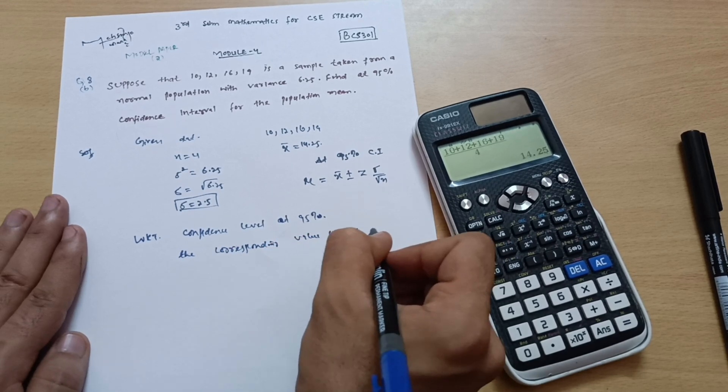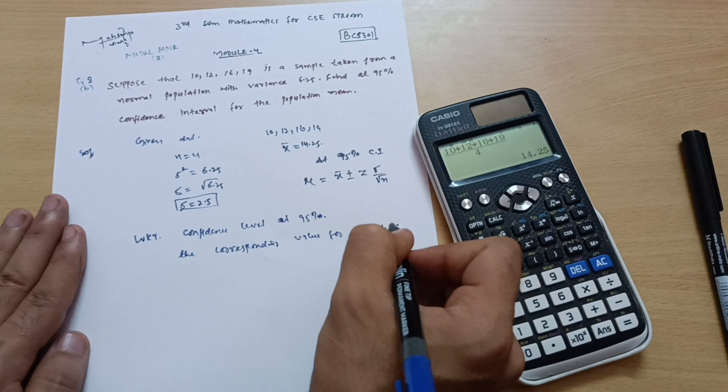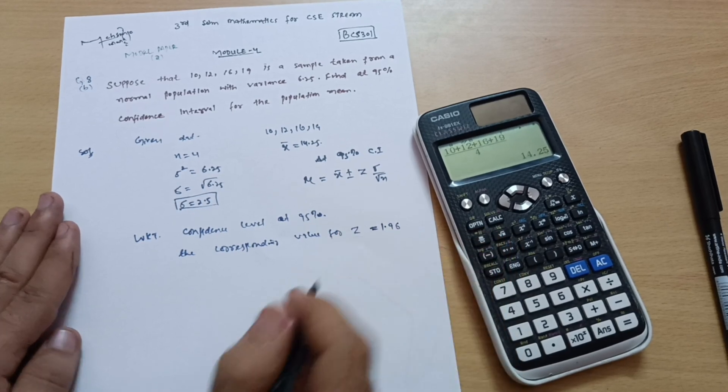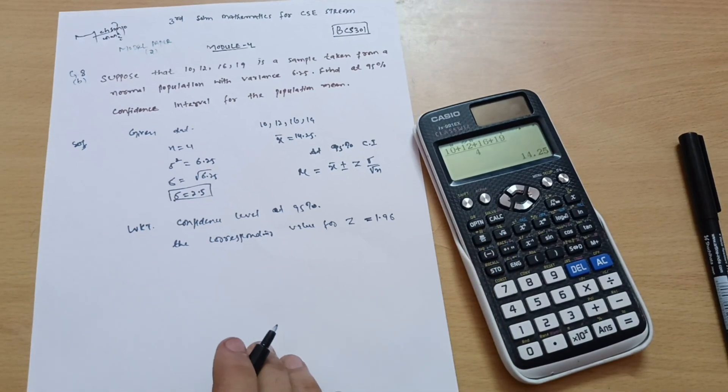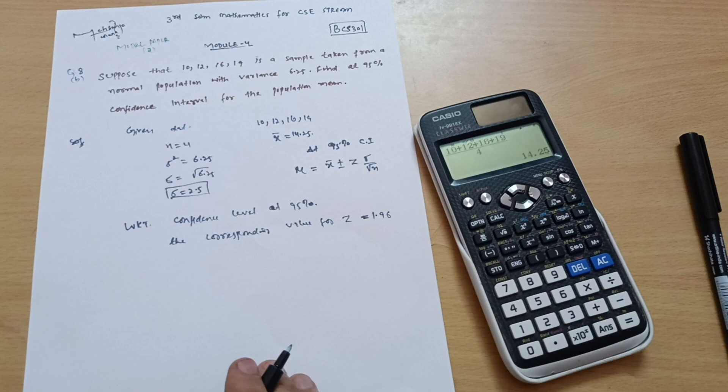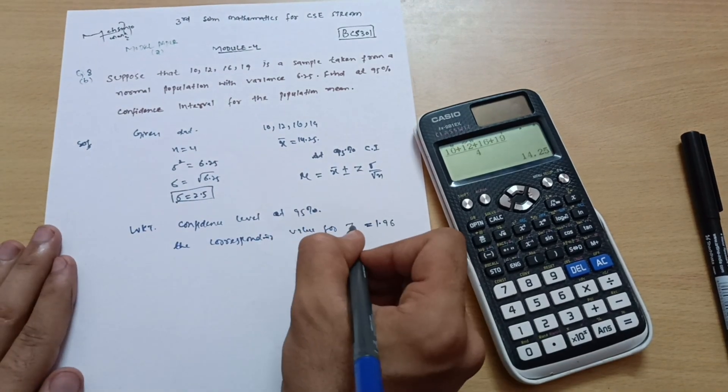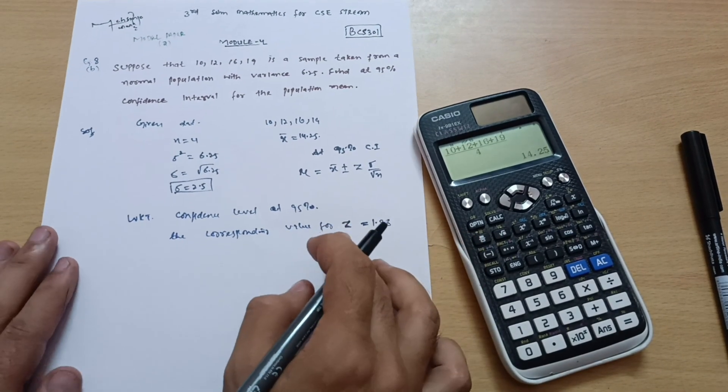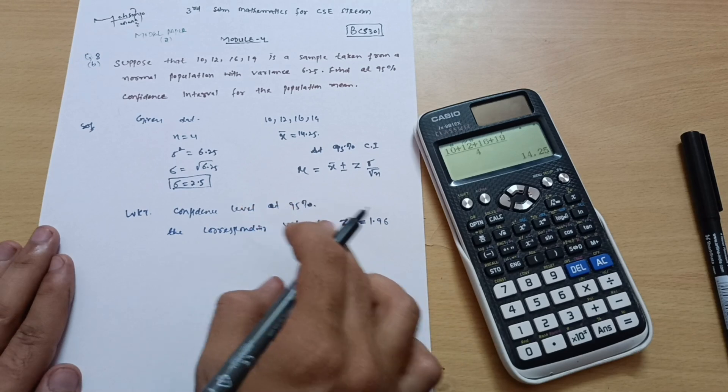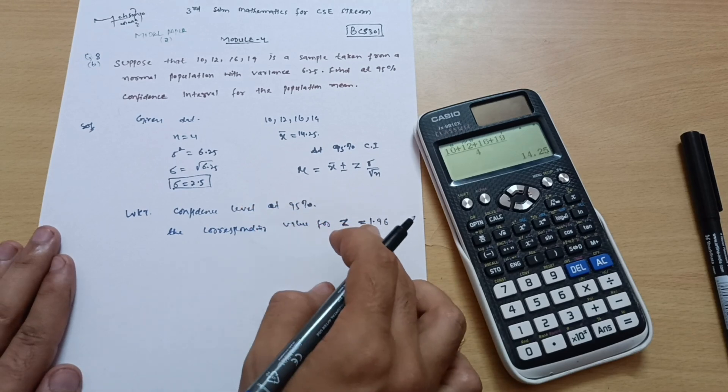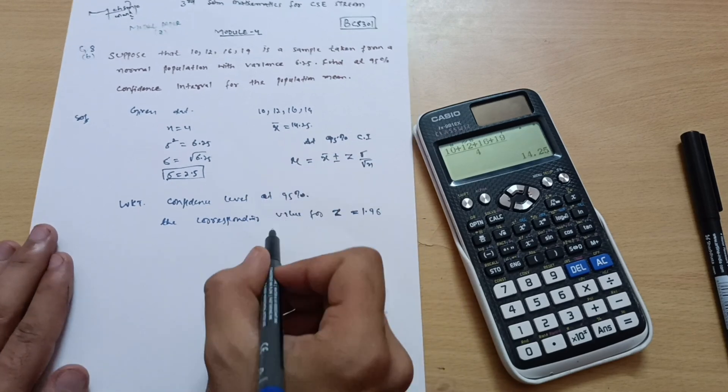The corresponding value for z, it is given by 1.96. So in the previous problem we have calculated the z value. You have to remember the z value as 2.5 something, which is calculated from the normal distribution table. So you should remember this value at 95% interval, z is equal to 1.96.